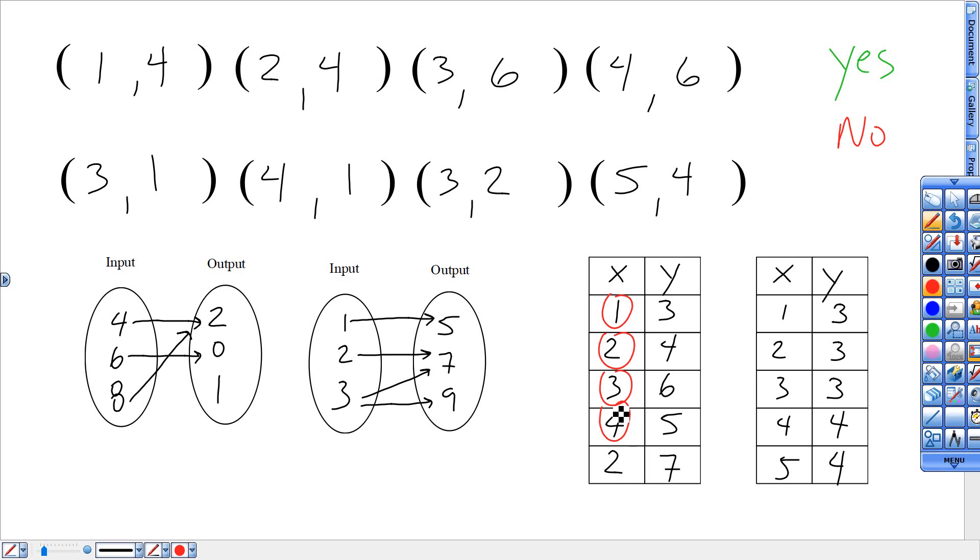If one of your x numbers repeat, though, look and see if the y numbers are different. And then remember on these, you're looking for the double arrow shooting out of each one to show an input having two different outputs.